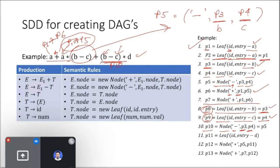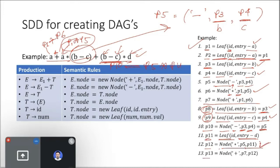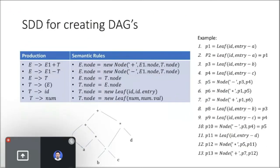P11 creates a new leaf entry for D, because D was never created by any previous process, so the leaf process creates a fresh entry for D. P12 generates multiplication between p5 and p11. P10 returned p5, so p12 is the multiplication between p5 (B minus C) and p11 (D). Finally, p13 adds the result of p7 and p12, combining both parts.